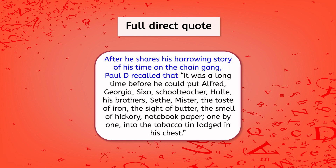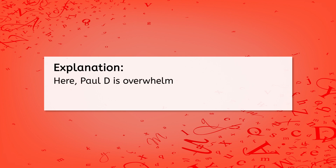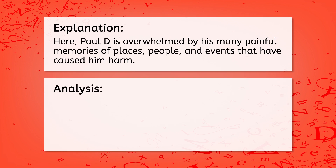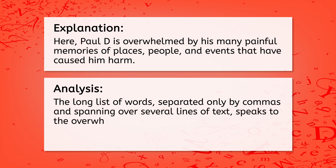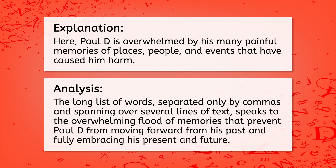I'll also write a sentence of explanation to put this quote in my own words, and a sentence of analysis to show my reader how I'm interpreting the quote to help support my claim. As my explanation I'll write: 'Paul D is overwhelmed by his many painful memories of places, people, and events that have caused him harm.' Then for my analysis I'll add: 'The long list of words, separated only by commas and spanning over several lines of text, speaks to the overwhelming flood of memories that prevent Paul D from moving forward from his past and fully embracing his present and future.' For this analysis, it makes sense to use the whole quote because that's the best way for my readers to follow my argument and really see what I'm talking about.